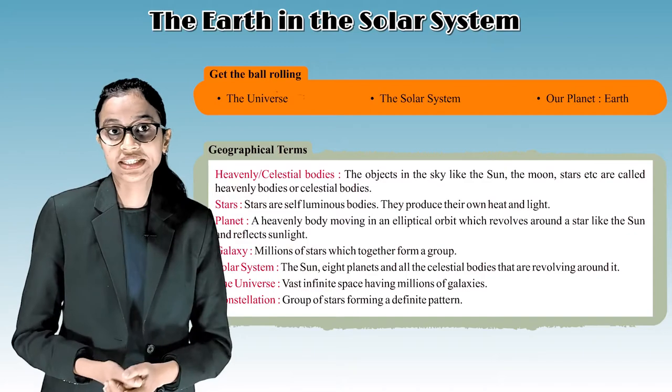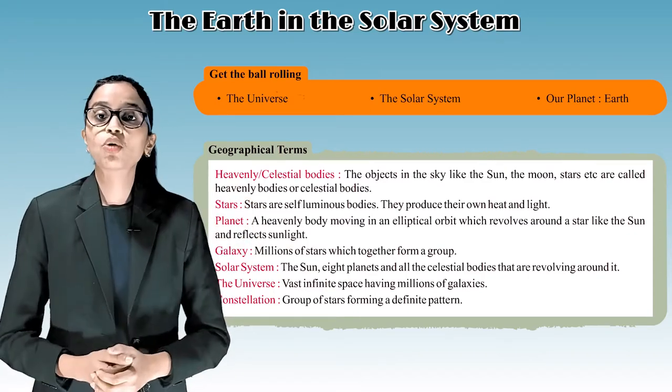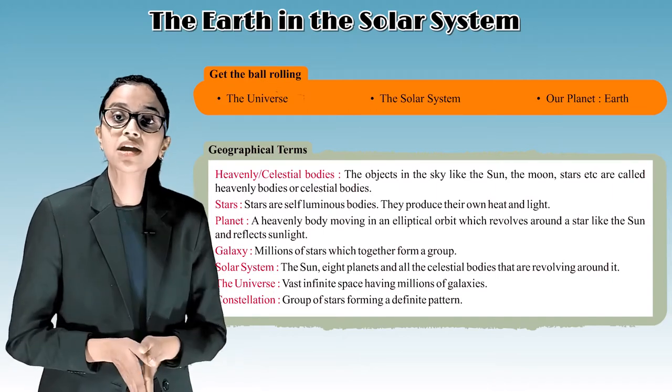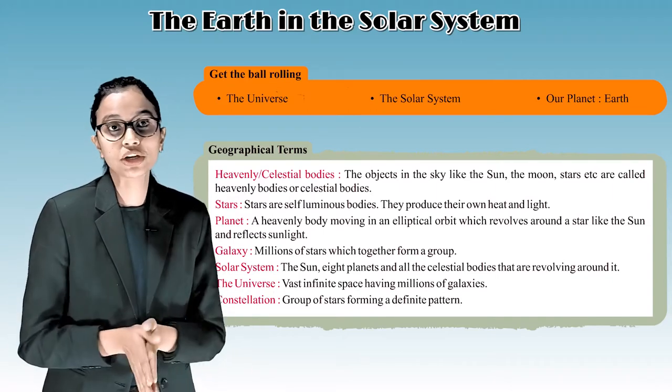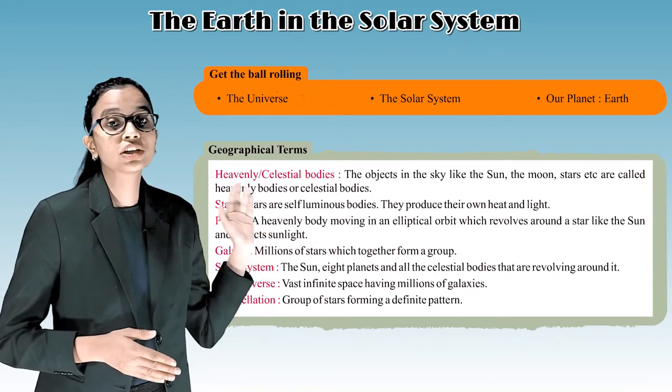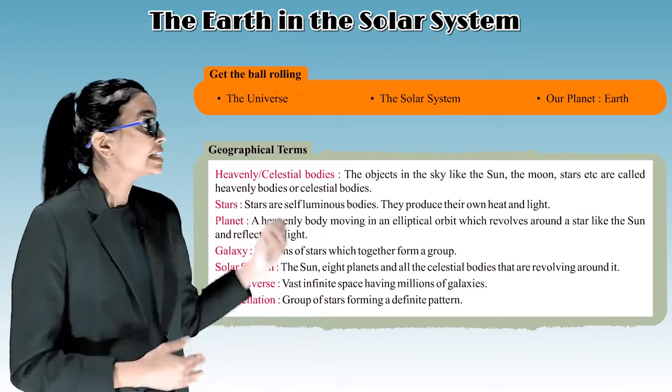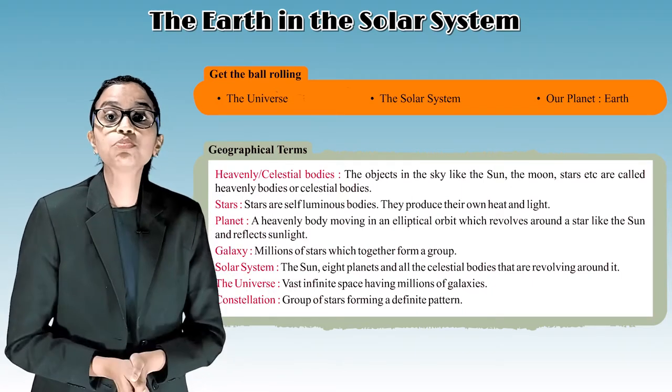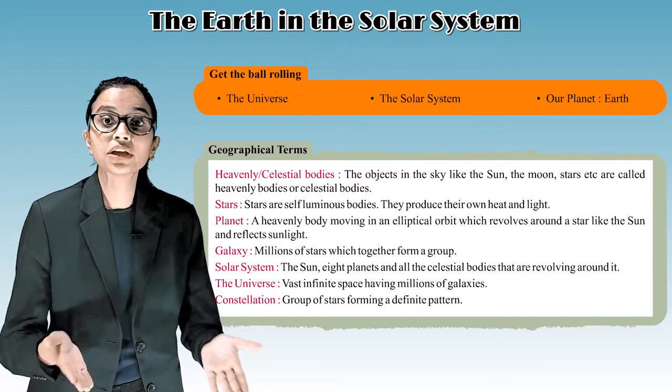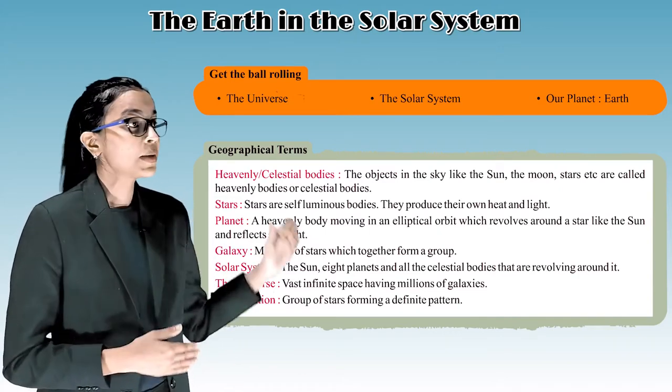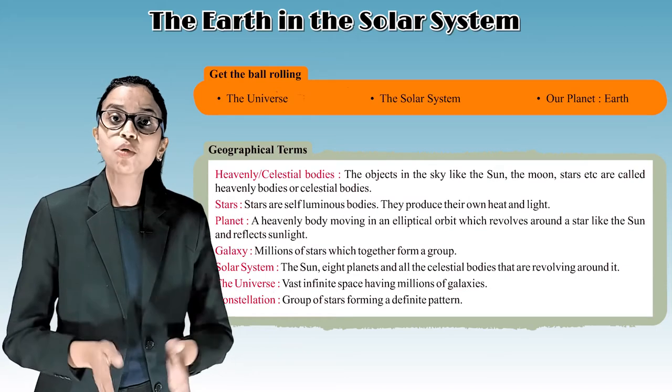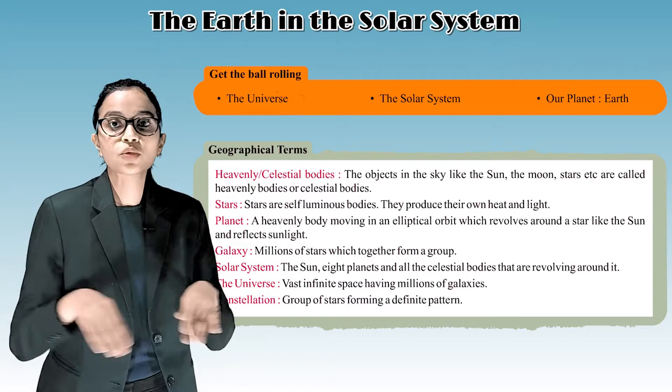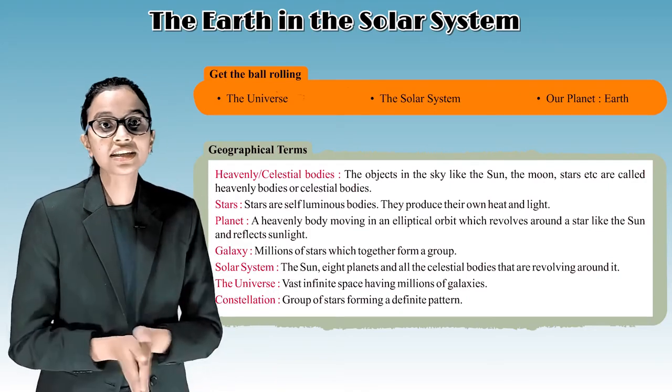Geographical terms. Heavenly celestial bodies. The objects in the sky like the sun, the moon, stars, etc. are called heavenly bodies or celestial bodies. Stars are self-luminous bodies. They produce their own heat and light. A planet is a heavenly body moving in an elliptical orbit which revolves around a star like the sun and reflects sunlight.